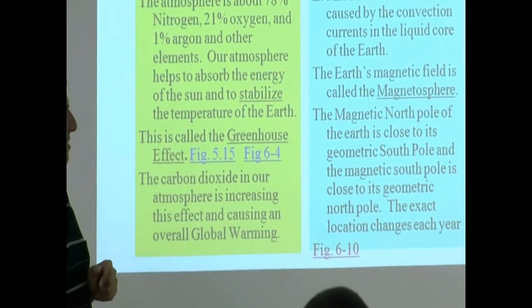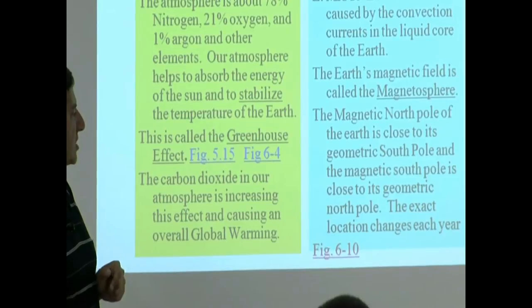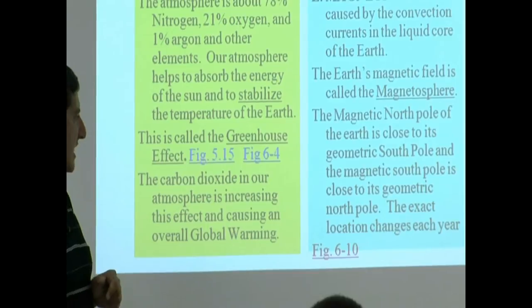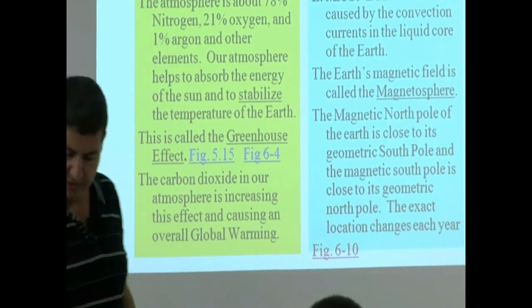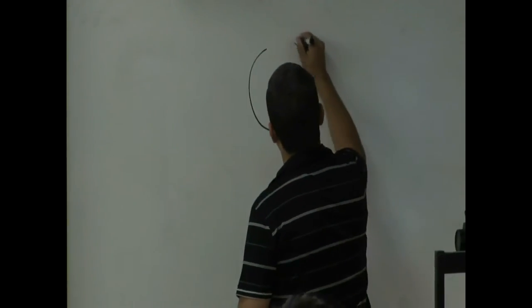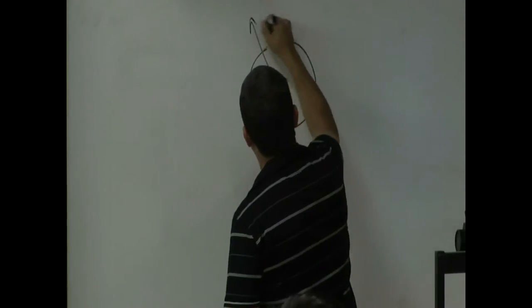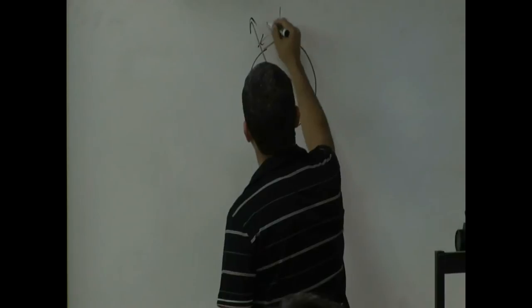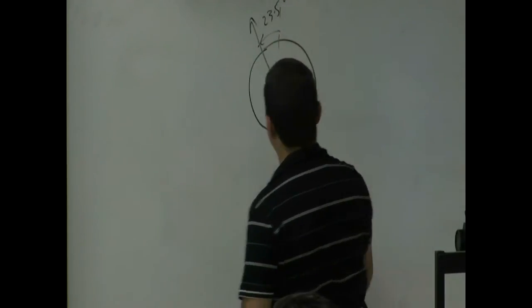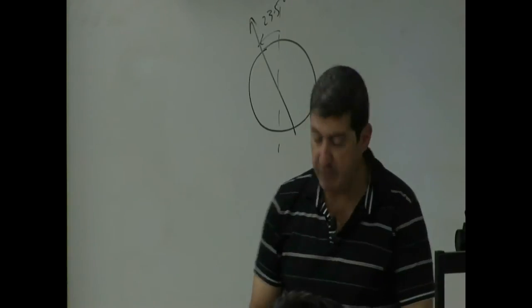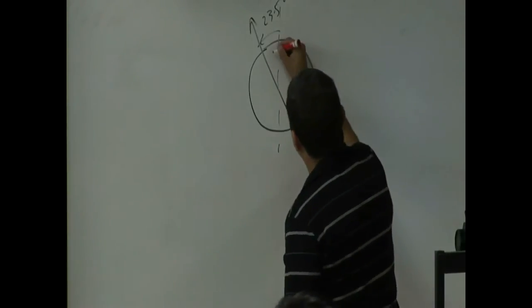The magnetic north pole of the Earth is close to its geometric south pole, and the magnetic south pole is close to its geometric north pole. The exact location changes each year. If you were to draw the Earth, remember the axis of the Earth is tilted by 23 and a half degrees from the vertical. Imagine as if the Earth is a huge giant magnet inside.